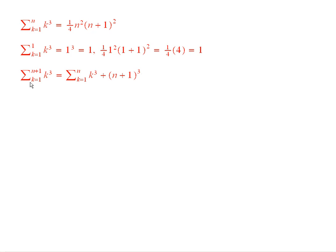First of all, if you take the sum from k equals 1 to n plus 1 of k cubed, it's the sum up to n plus the last term, which is n plus 1 cubed.